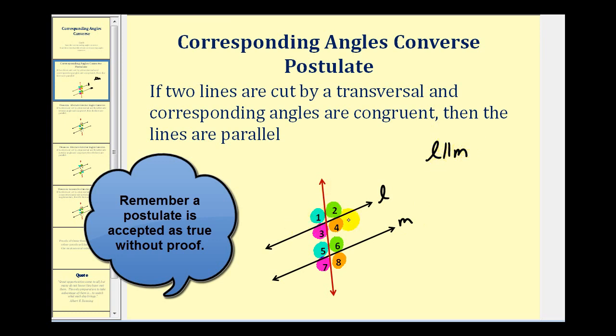We can also identify the parallel lines by using arrows. If we use a single arrow on this line and a single arrow on this line, those lines would be parallel.